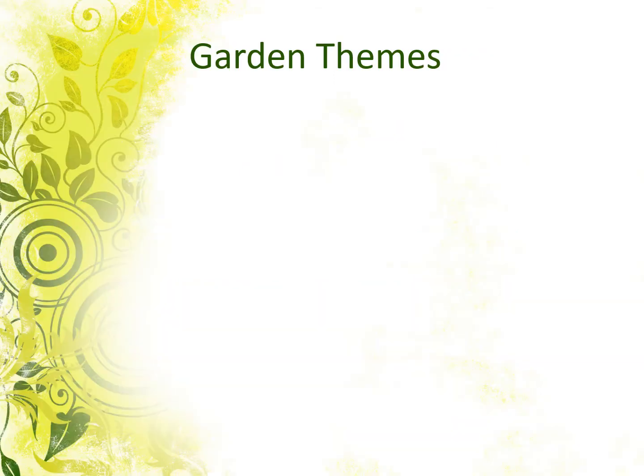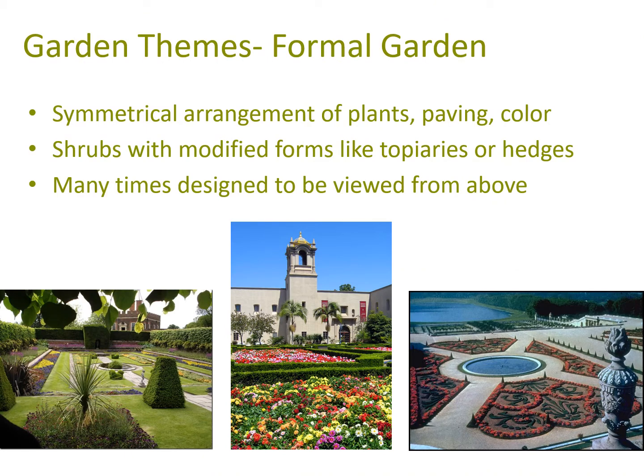Some quick garden themes to consider: formal gardens feature symmetrical arrangements of plants, paving, and color; shrubs are often modified into topiaries or hedges. Many of these were designed to be viewed from above — at Versailles, for example, guests would go to the second level and look down upon the landscape, like a Persian carpet of planting and flowers, with simple or very complex scrolling patterns.